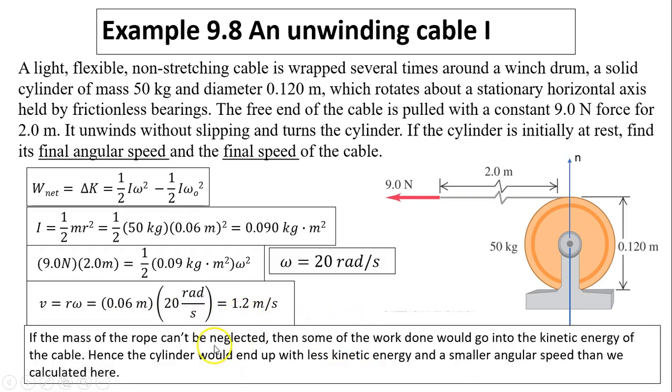If the mass of the rope cannot be neglected, in most cases that's true because you have to have something heavier than just a very thin cable, then some of the work done would have to go to the kinetic energy of the cable. Hence, the cylinder would end up with less kinetic energy and a smaller angular speed than we calculated here. For example, when we do a lab, if we calculate this speed, that could be one of the experimental errors: to neglect, in fact we neglect the mass of the rope. So in fact, that mass may not be negligible.